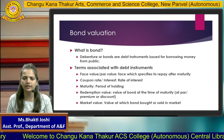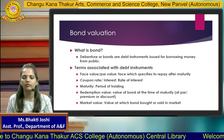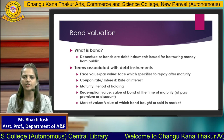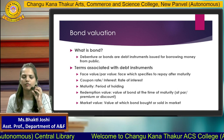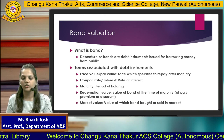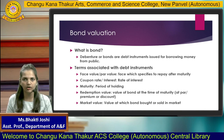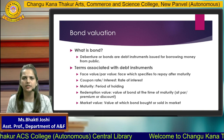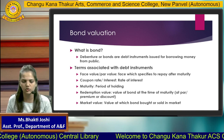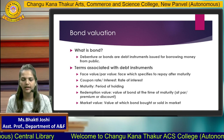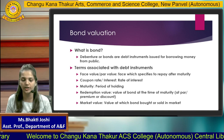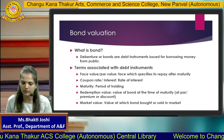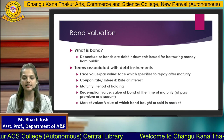The last part of this chapter covers bond valuation. A bond is a debt instrument which is issued for borrowing money from the public. There are certain terminologies associated with debt instruments. Face value or par value is the value specified to be repaid after maturity. Coupon rate or interest rate is the rate of interest on the bond. Maturity is the period of holding of that instrument. Redemption value is the actual value of the bond at the time of maturity — it can be at par, at a premium, or at a discount. Market value is the value at which the bond is bought or sold in the market.